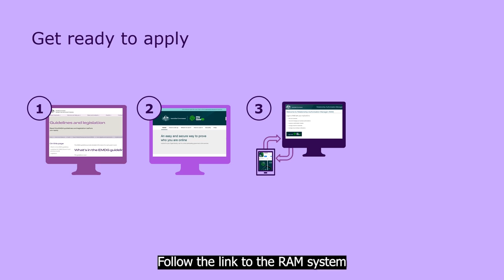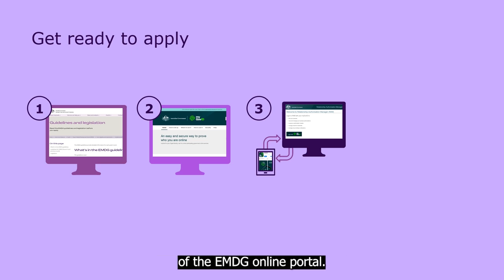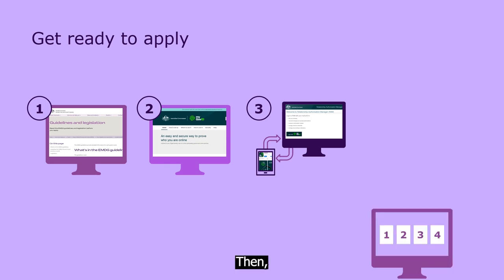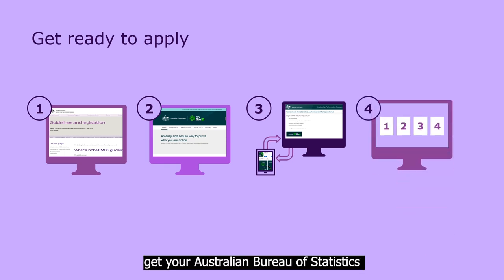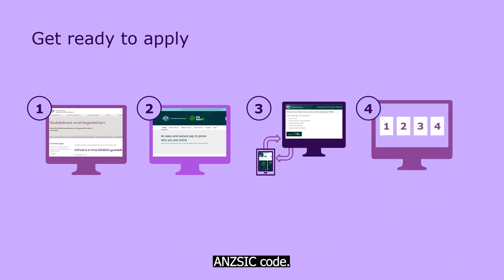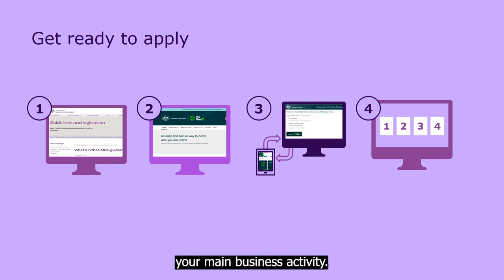Follow the link to the RAM system from the homepage of the EMDG online portal. Then, get your Australian Bureau of Statistics ANZIC code — the four-digit industry class that best describes your main business activity.